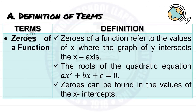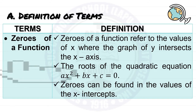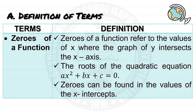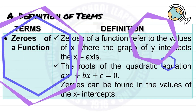Lastly, the zeros of a function refer to the values of x where the graph of y intersects the x-axis. In short, these are the roots of the quadratic equation ax² + bx + c = 0. Zeros can be found in the values of the x-intercepts.